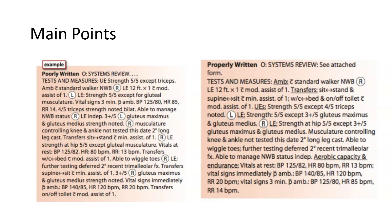It's important to pay particular attention to the specific components of documenting different test results. Some tests only have a single positive result — positive meaning there is pain. Other tests, like ligament stability tests, could be positive for pain or for instability and laxity, and you would need to document both. In addition to muscle tests, there are sometimes charts used for manual muscle testing or range of motion testing, rather than writing everything out longhand.